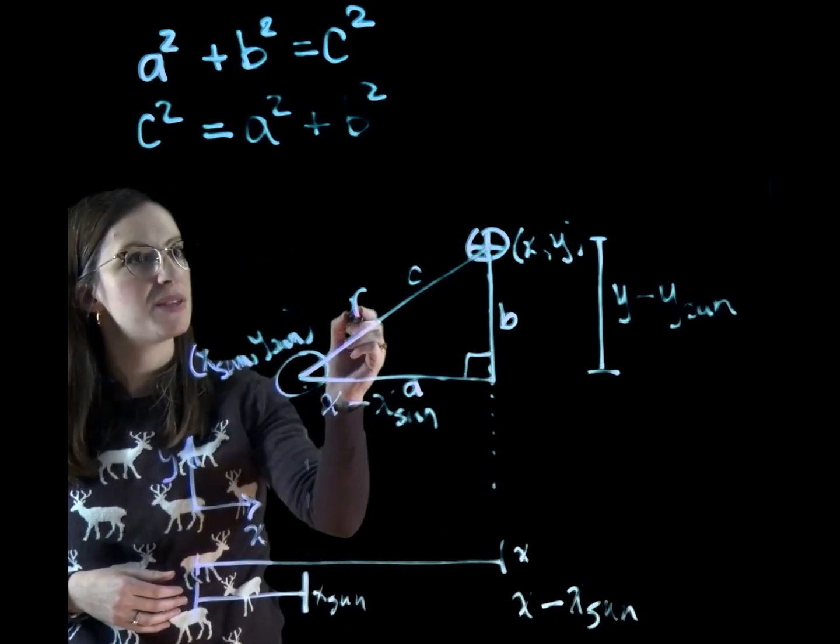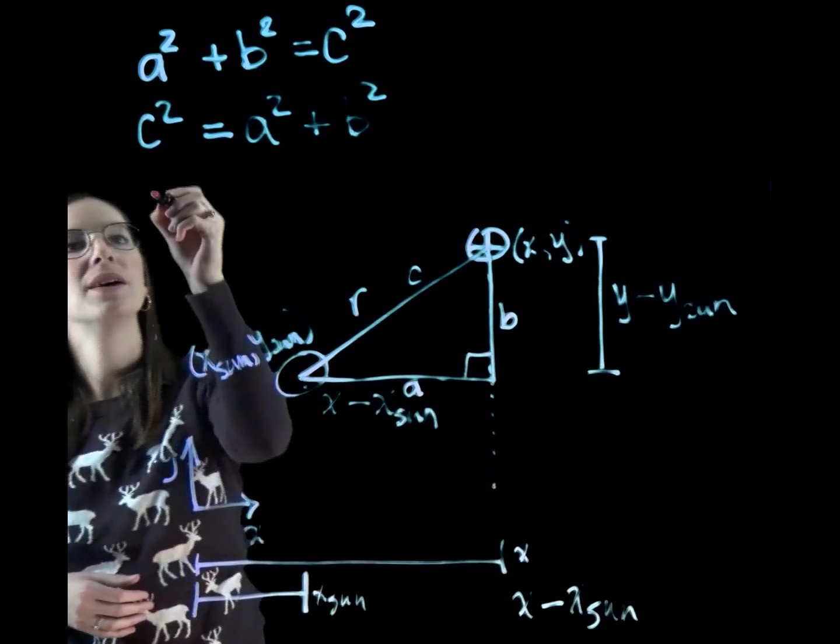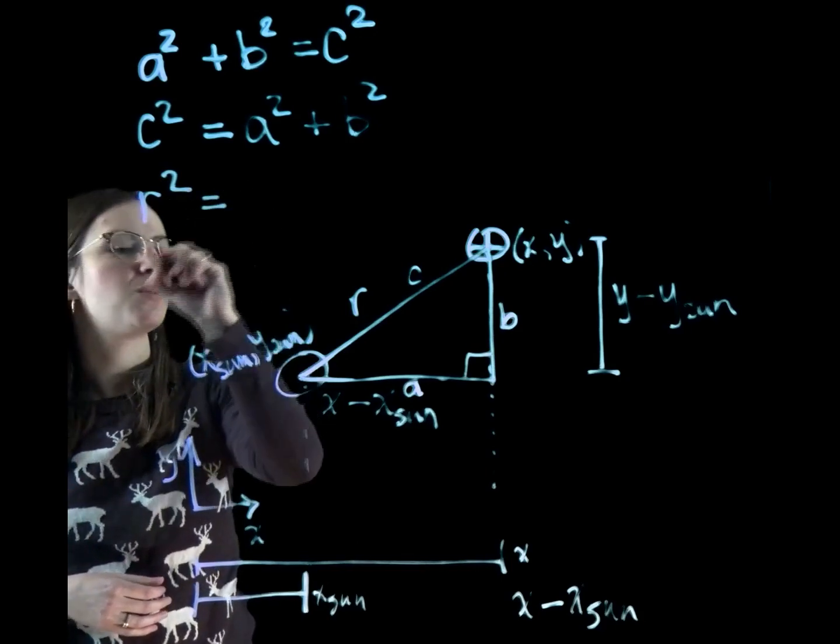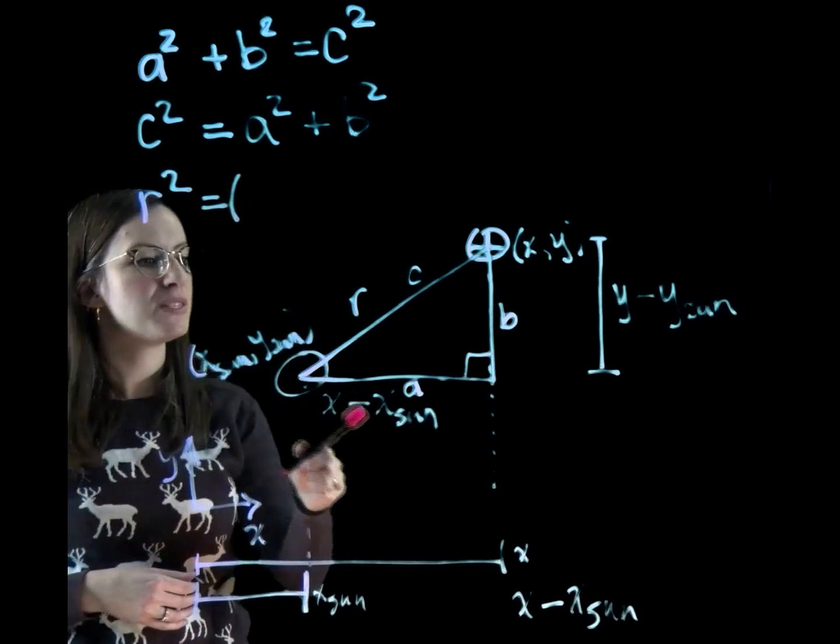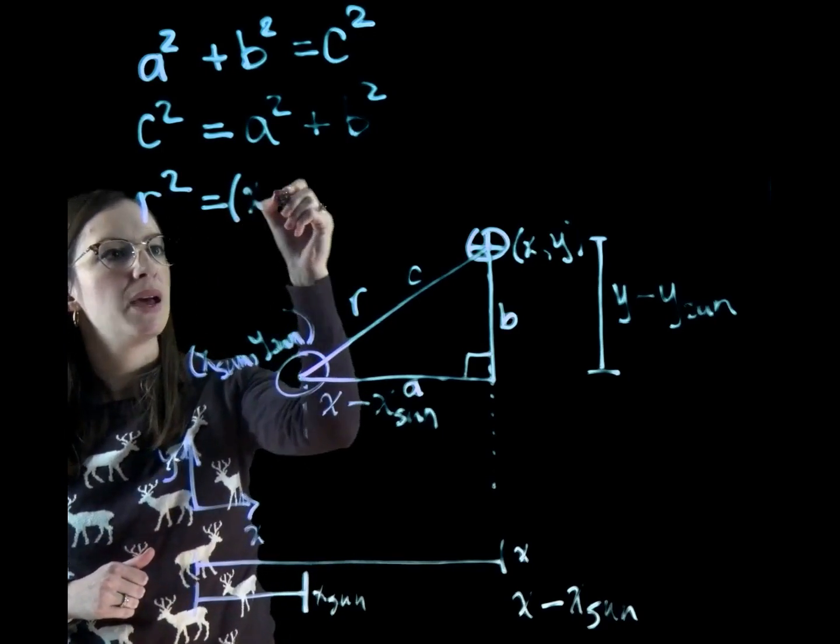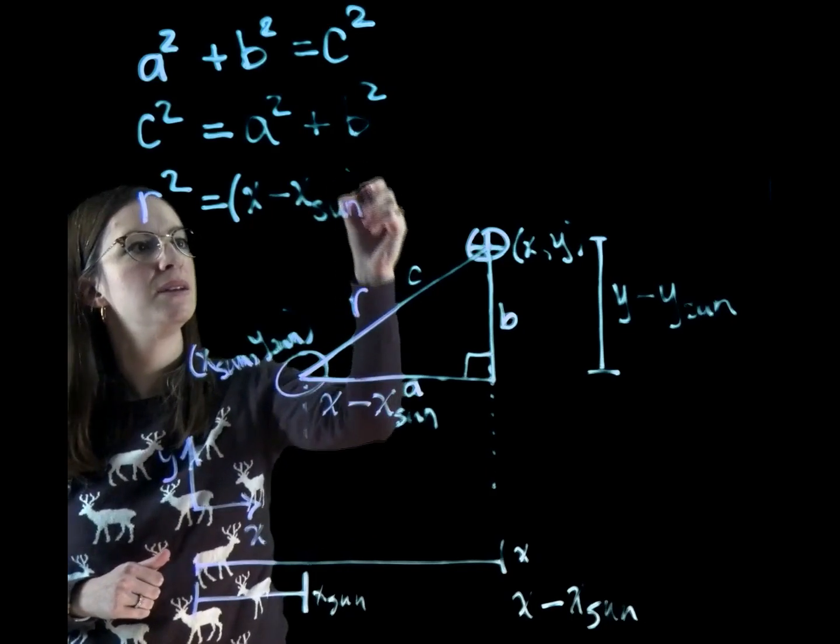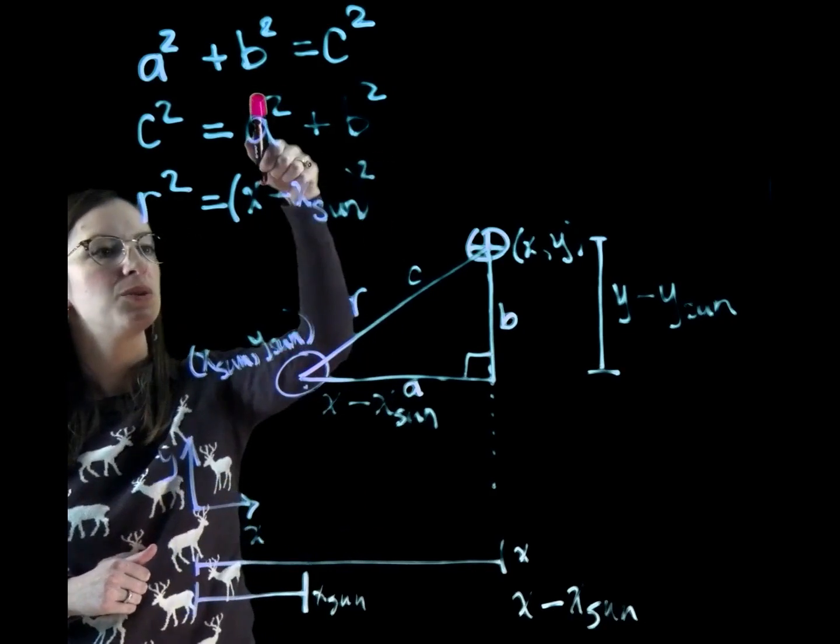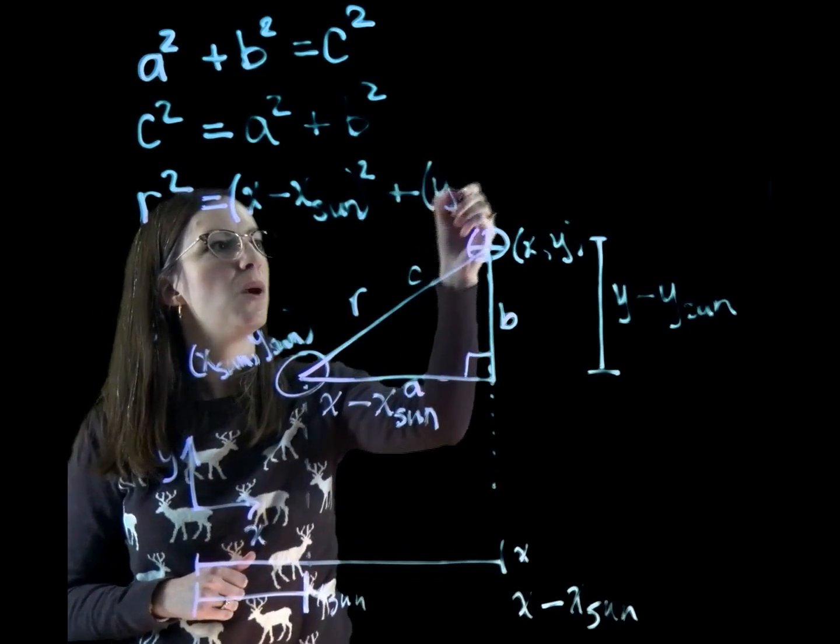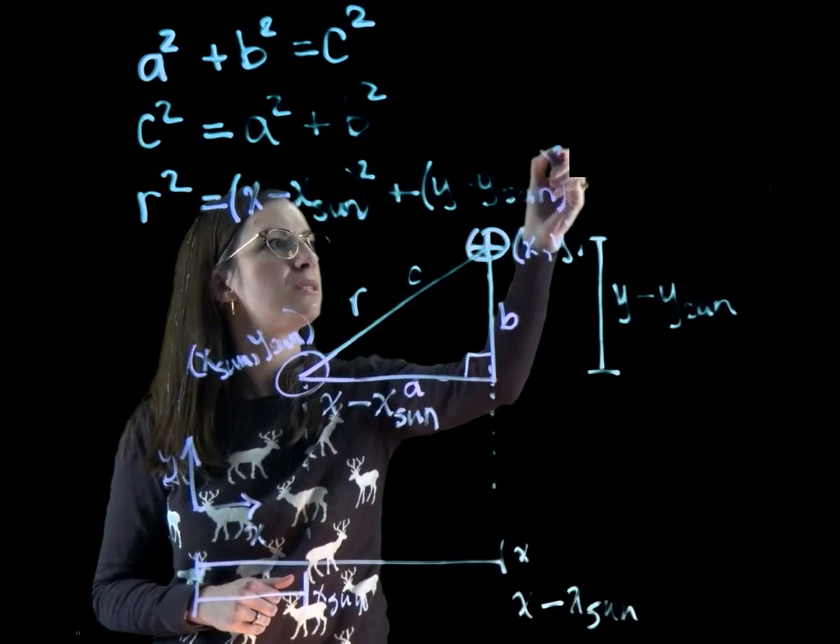So I'm going to write the same exact equation in terms of our r's, x's, and y's. So this is r squared, which equals, and I have to put this in parentheses because I have a difference to do. x minus x sun, and we're squaring that just like we've squared A. And then we have plus y minus y sun, and we square that.